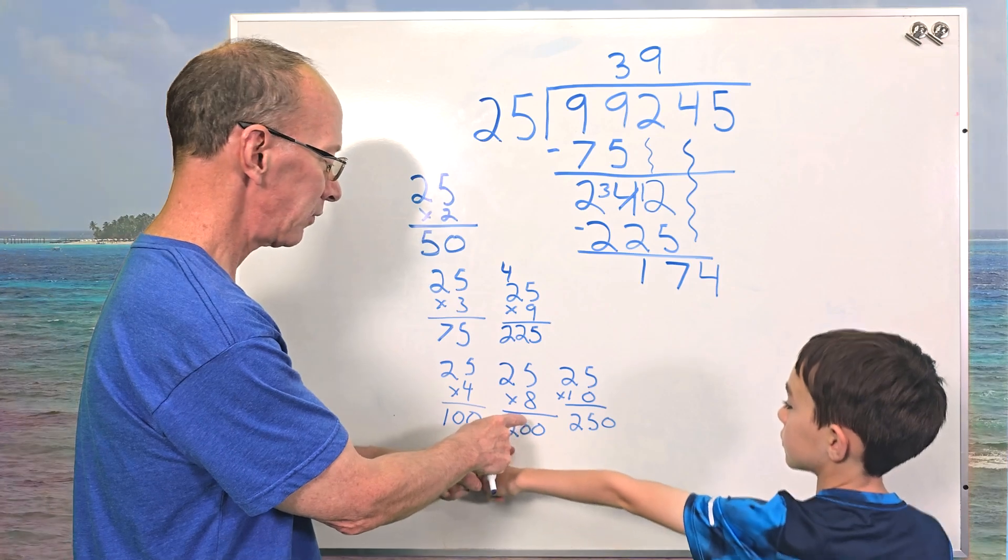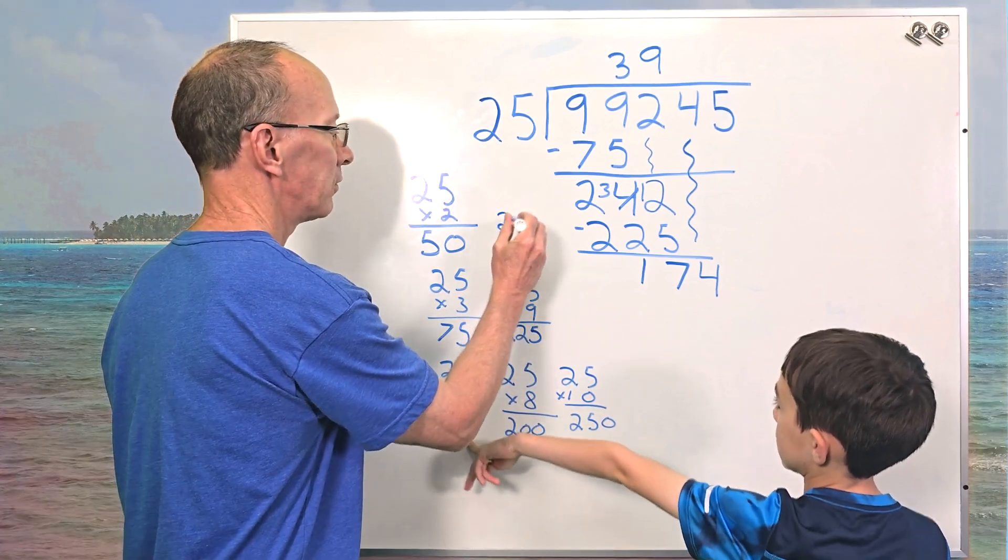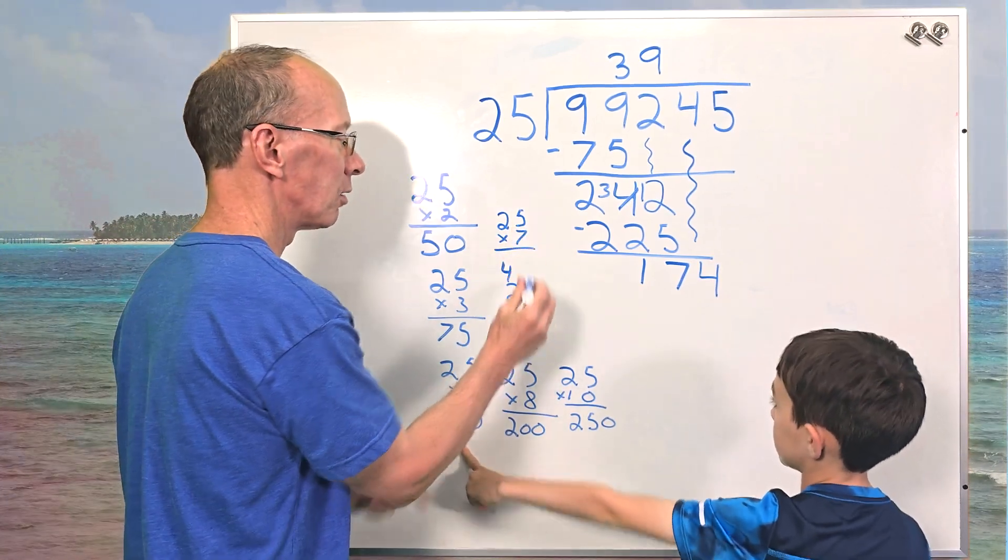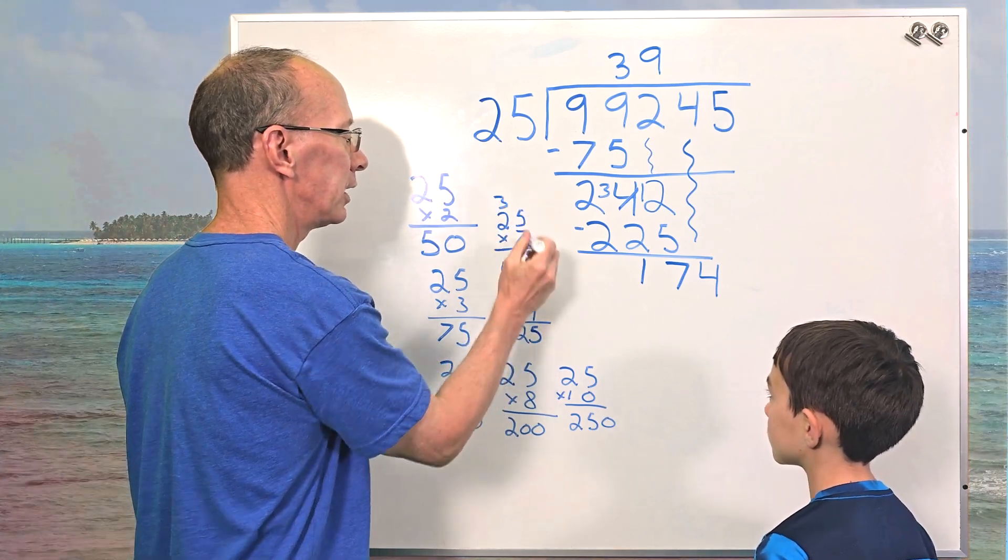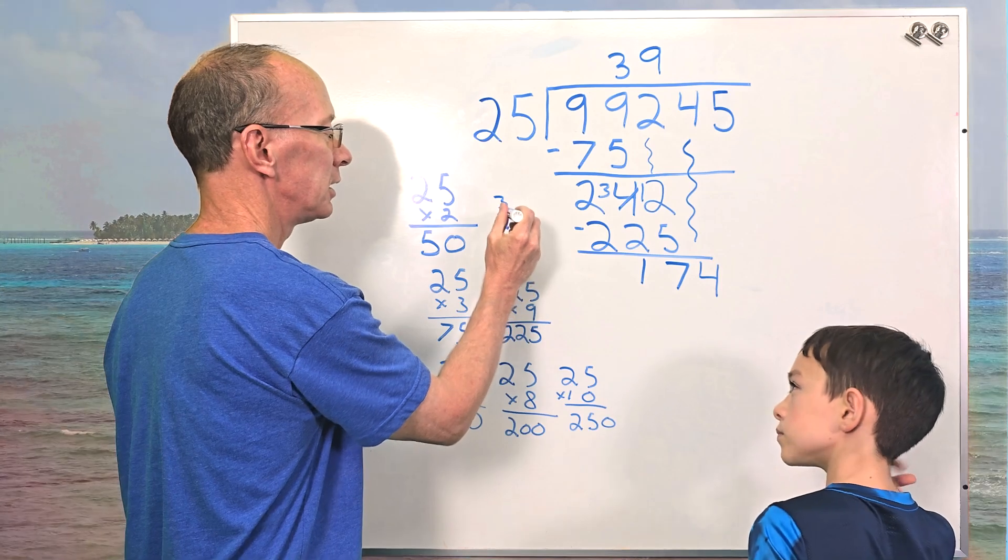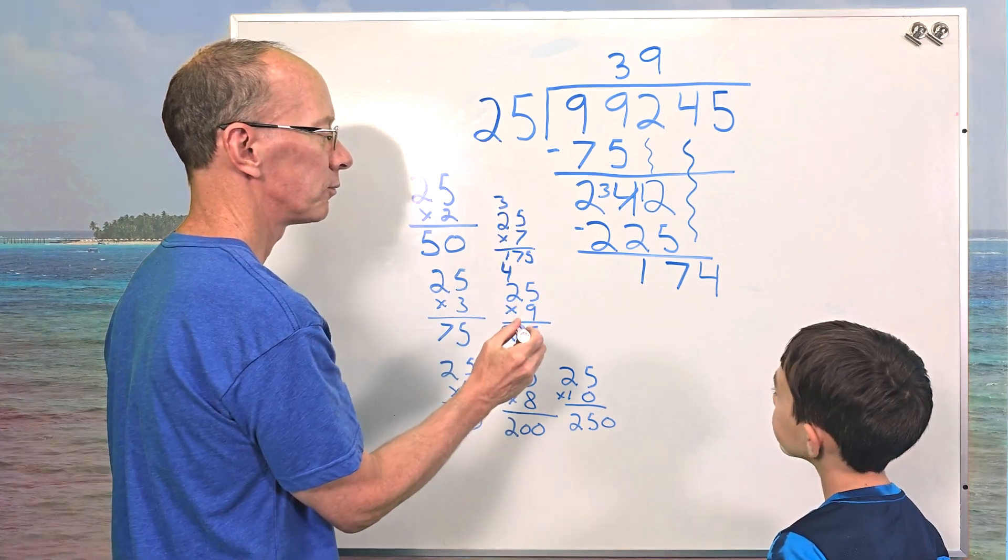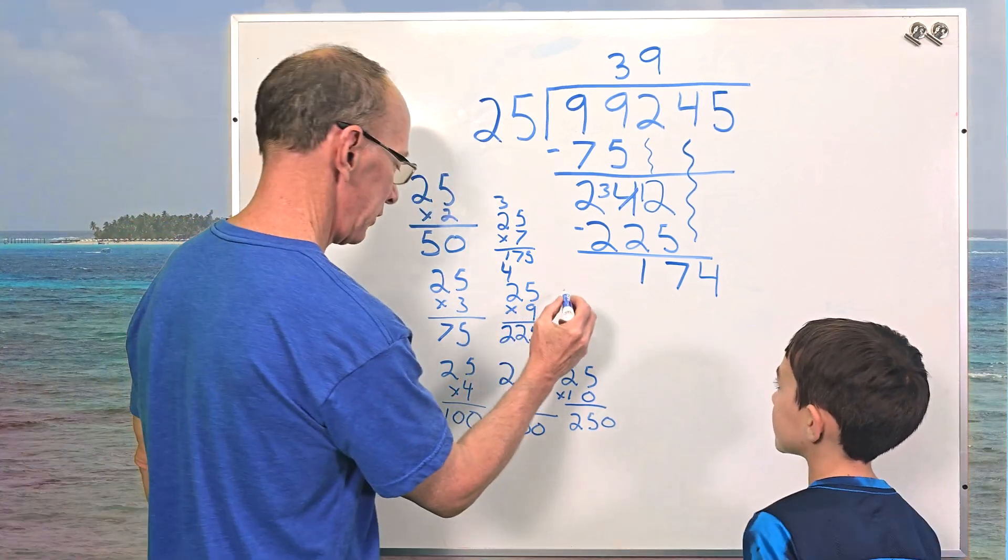So let's do 25 times seven. Five times seven. Nope. That's too small. Five times seven would be 35. Carry the three. Seven times two is 14. 15, 16, 17. Too high. Too big. Too high. So let's try 25 times six.